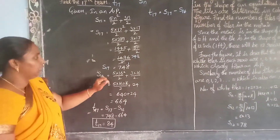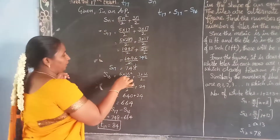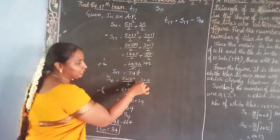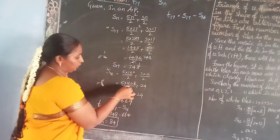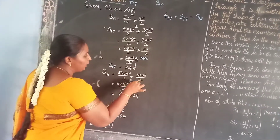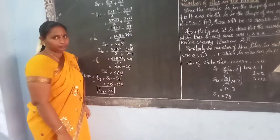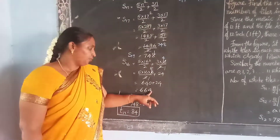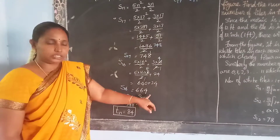Next, S16: substitute n = 16. 5×16²/2 + 3×16/2. Simplifying 16²/2, we get 16×8, and 3×16/2 = 24. Adding these two numbers, we get 640 + 24 = 664. So S16 = 664.